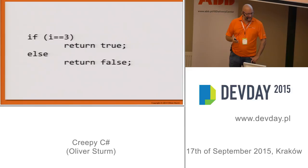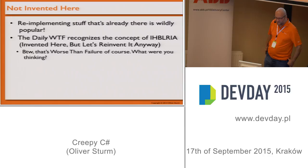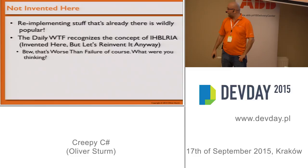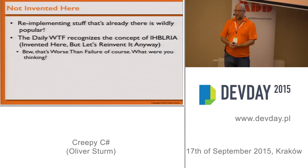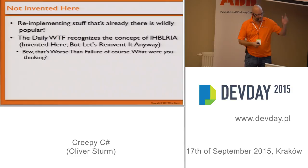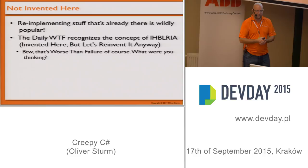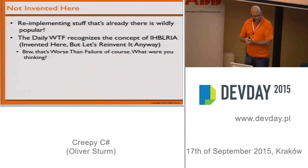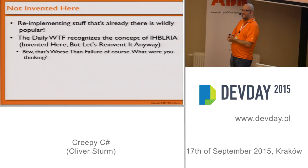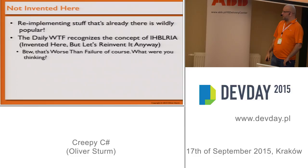Moving on to 'Not Invented Here' — the idea where people write code that someone has already written for them, or even worse, code they've already written themselves and forgotten. The Daily WTF website publishes really crazy stuff and has a concept they named IHBLRIA — 'Invented Here But Let's Reinvent It Anyway.' A lot of people do this all the time.